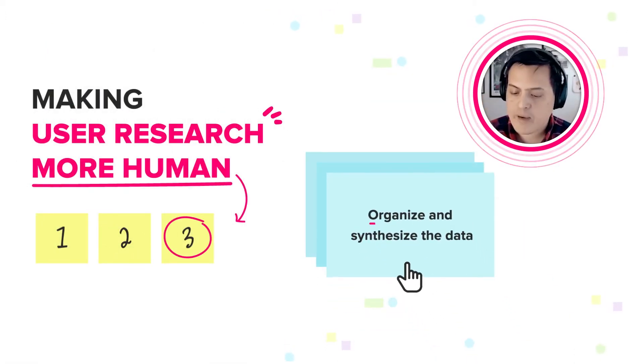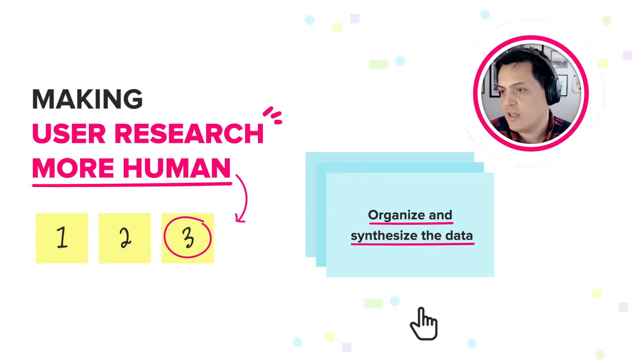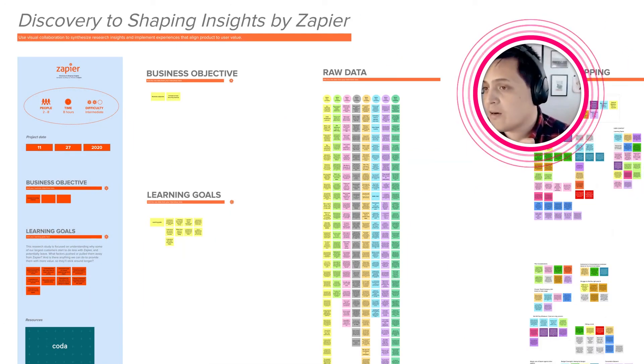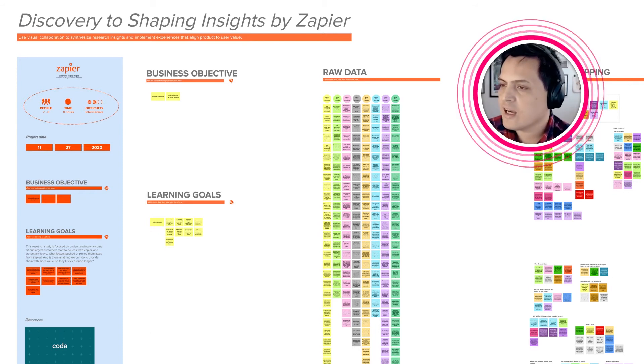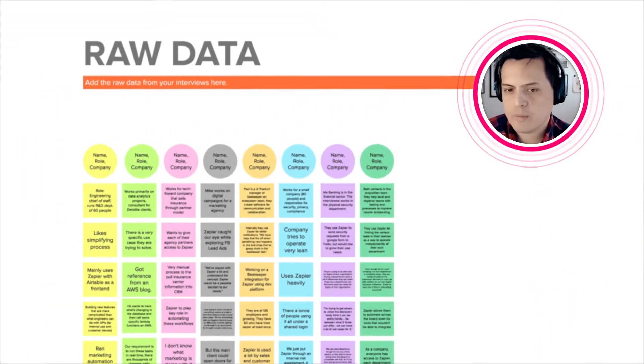The next step is to start finding patterns and frequency among this data. So we're trying to find patterns by finding post-its across the colors that represent similar ideas. Now it's a lot easier to dig into specific information.